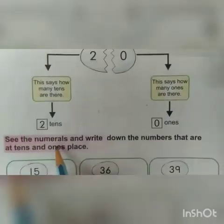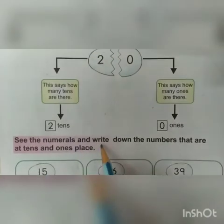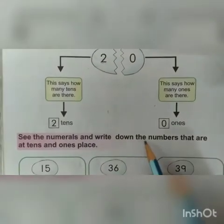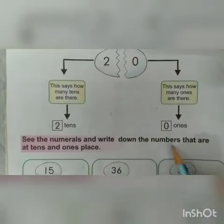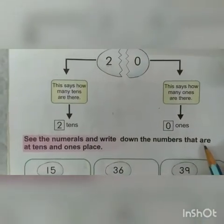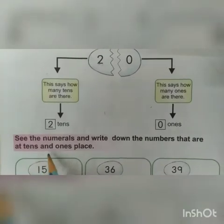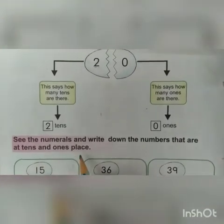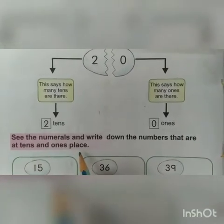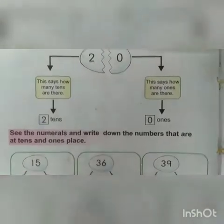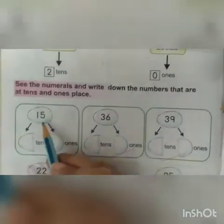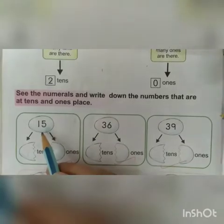Let's start. See the numerals and write down the numbers that are at 10s and 1s place. Okay? Let's start. Which number is this? 15.